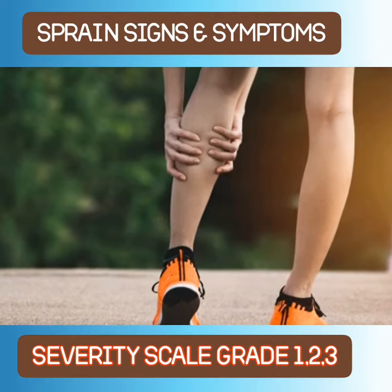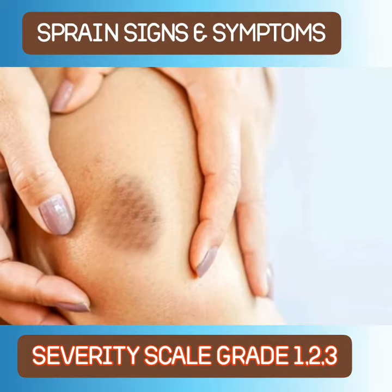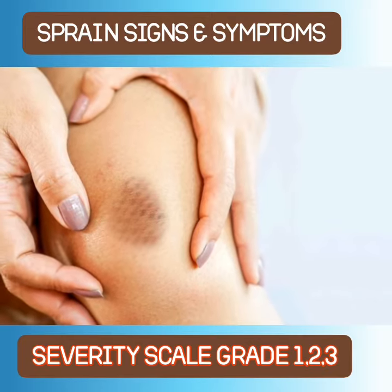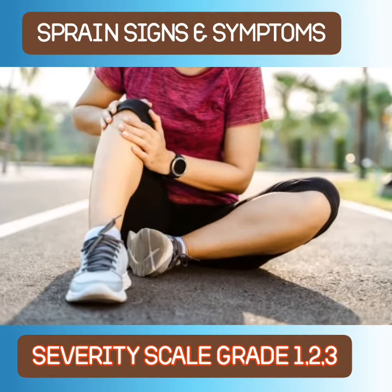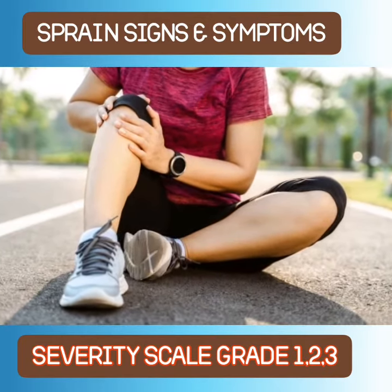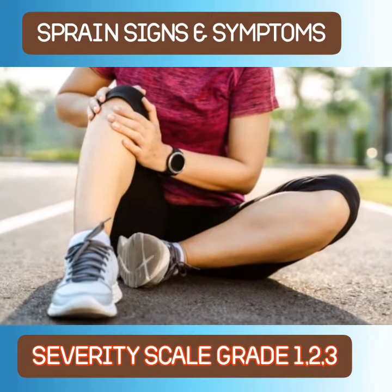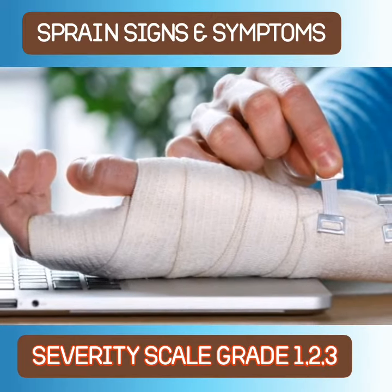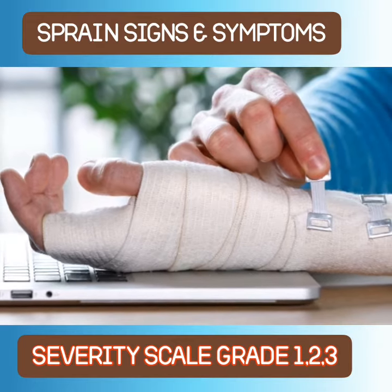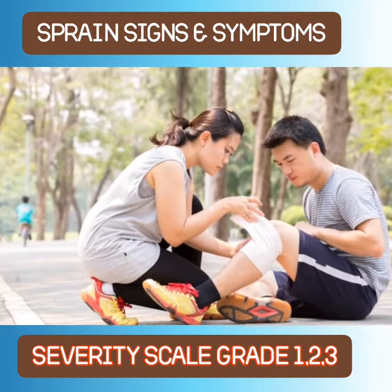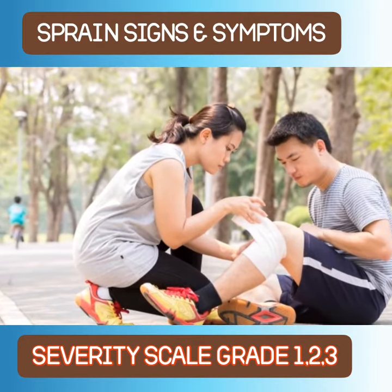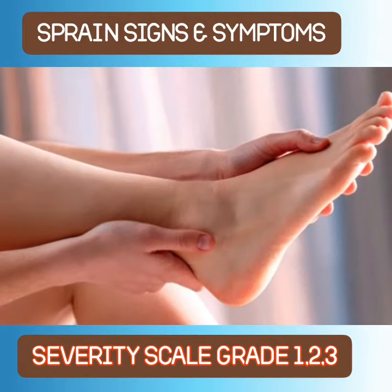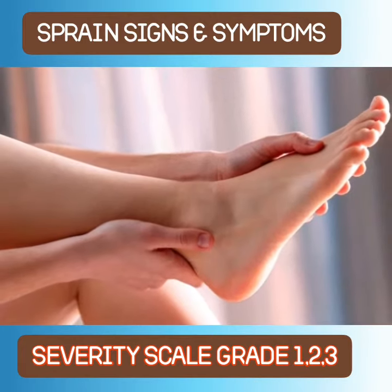Sprain severity scale. Grade 1: The grade 1 mild sprain causes overstretching or slight tearing of the ligament with no joint instability. A person with a mild sprain usually experiences minimal pain, swelling, and little or no loss of functional mobility. Bruising is absent or slight and the person is usually able to put weight on the affected joint.